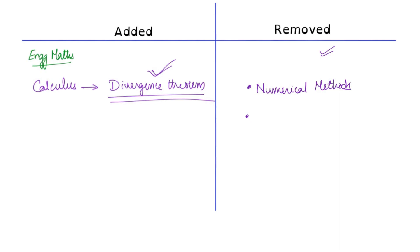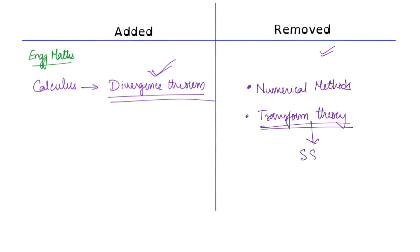Another topic removed is transform theory, which includes the Laplace transform, the Fourier transform, and the Z transform. This has been removed from the math syllabus, but remember it is still present in the signals and systems subject. So you still have to study transform theory — be careful here, do not think that transform theory is not there at all.